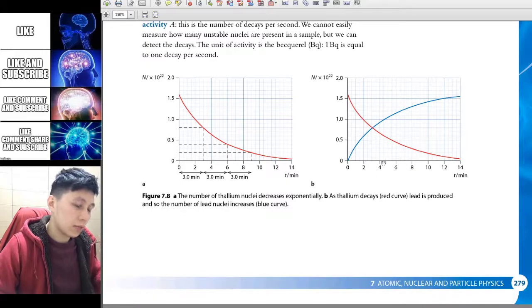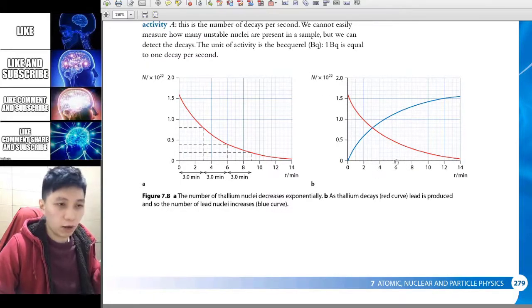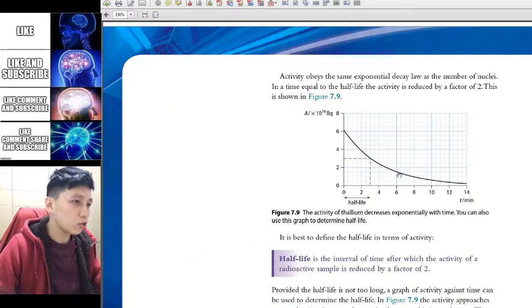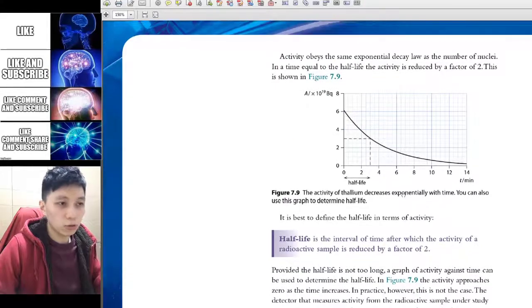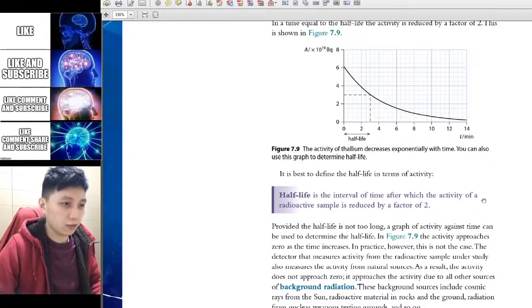Yeah that's the difference. However when they try to plot on the graph against time you can see the shape is exactly the same. So no matter which graph you're looking at you can also deduce the half-life like usual.